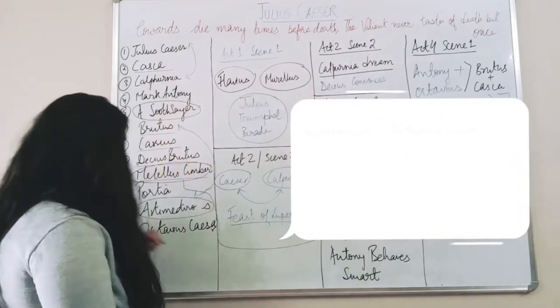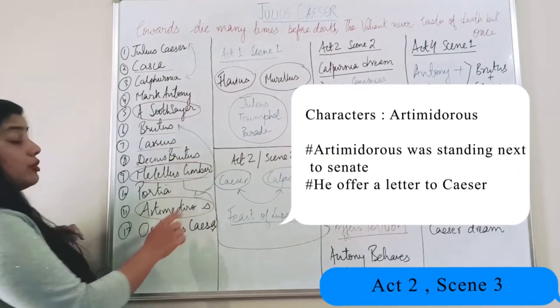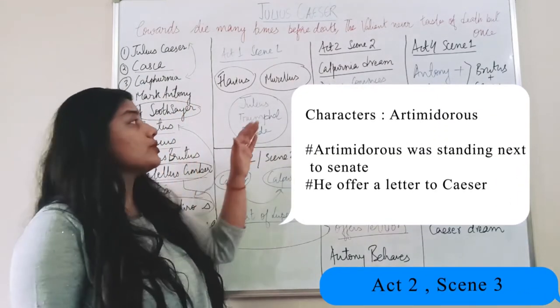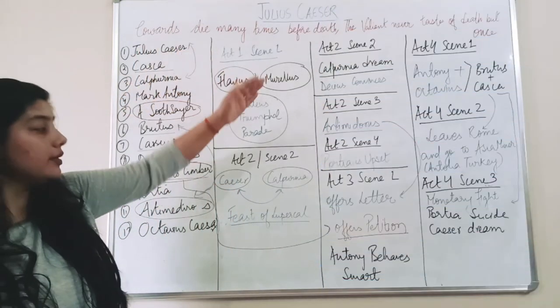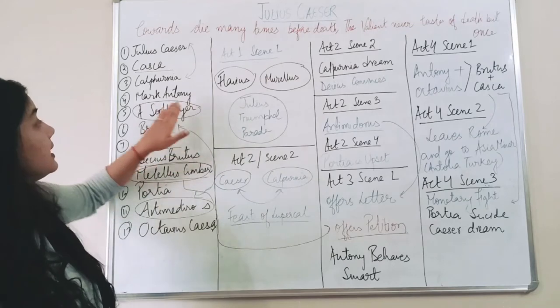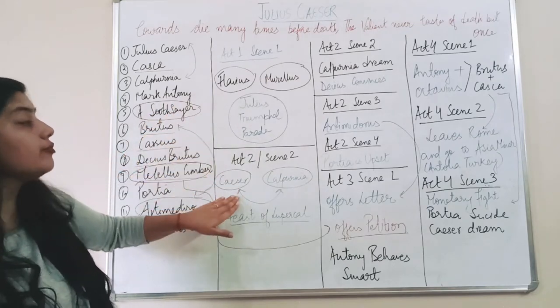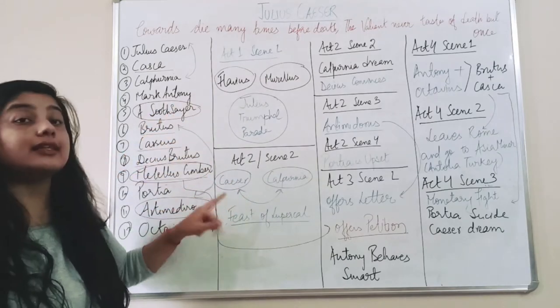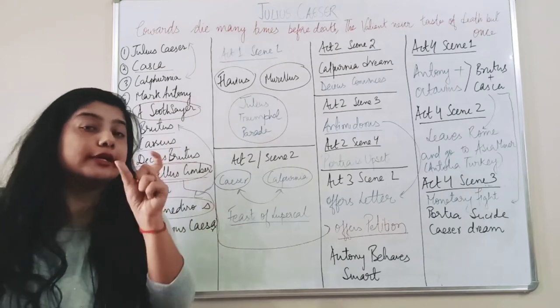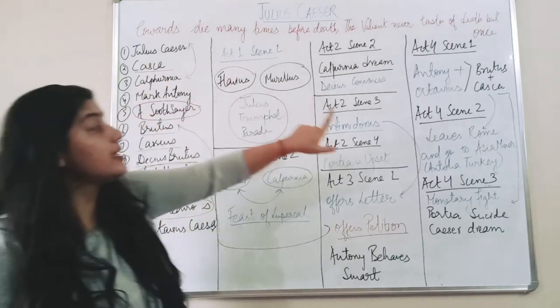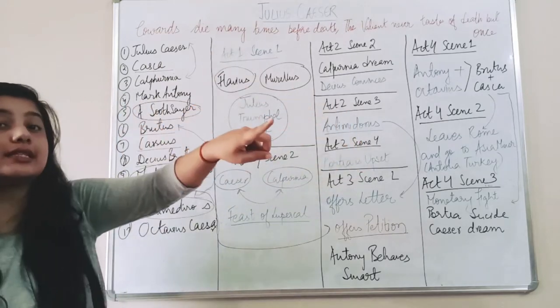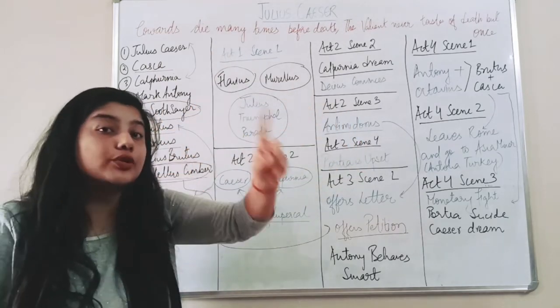'We will go and see what is going to happen.' Now this is Act 2 Scene 3. I told you this Artemidorus. This person was standing and before that this soothsayer has already told, when in the feast of Lupercal, this soothsayer has already informed the people and Caesar that 'your life is in danger on a particular day, do not move out.' After this, in this scene when he is going to the senate, when Caesar is going to the senate.